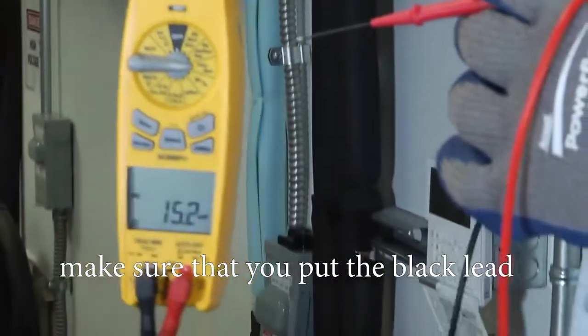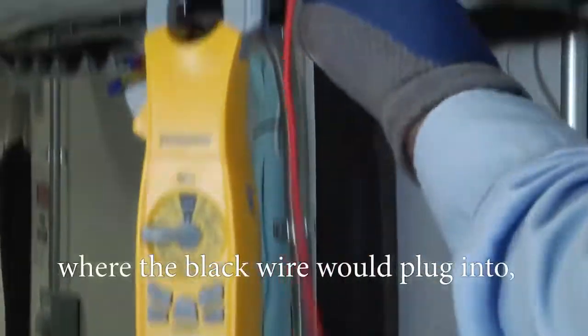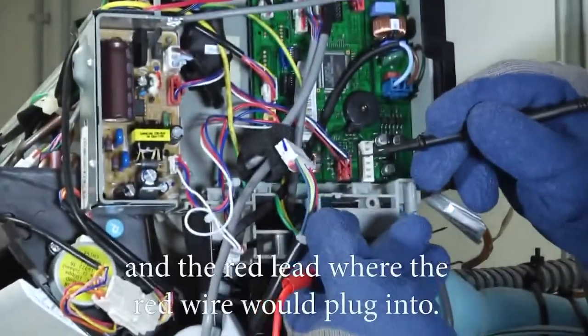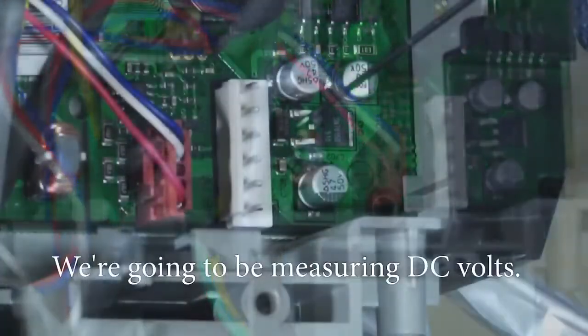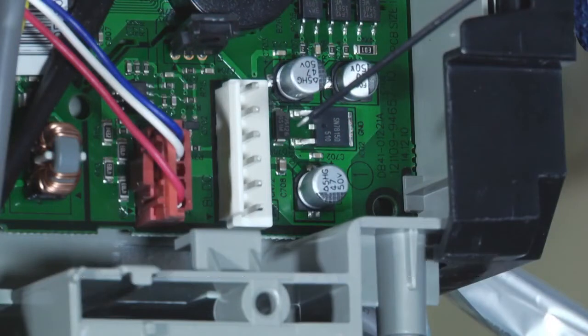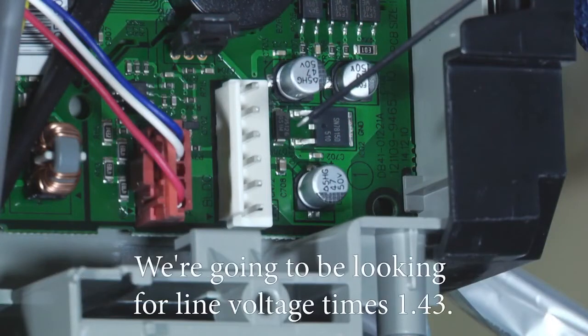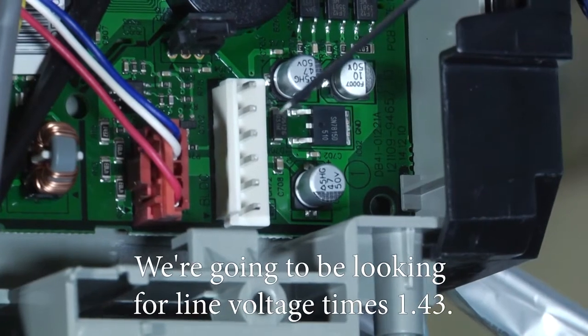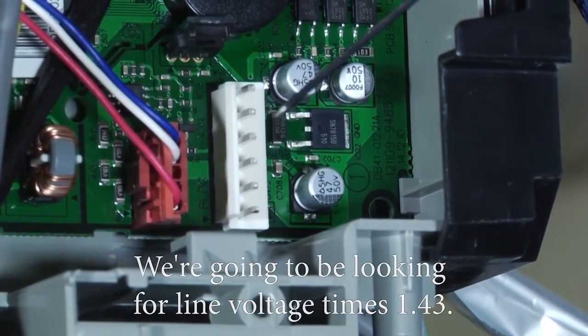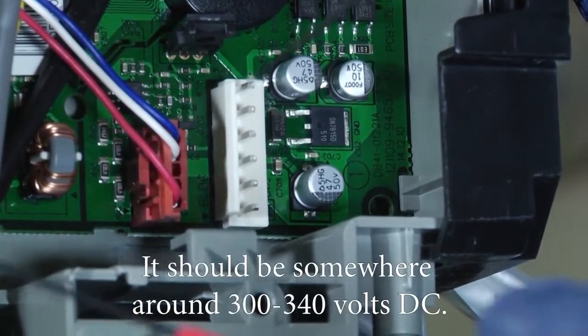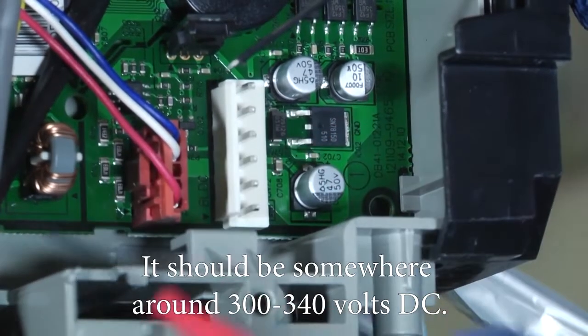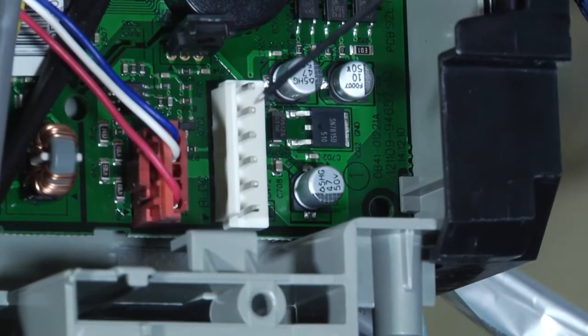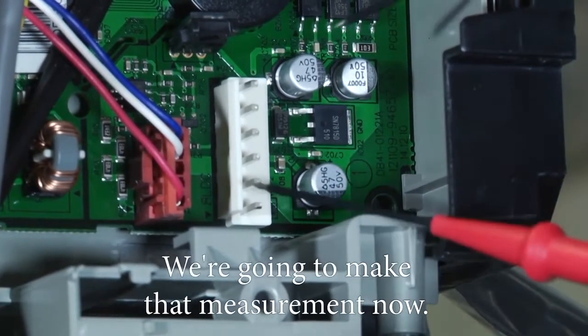We're going to be measuring DC volts. We're going to be looking for line voltage times 1.43. It should be somewhere around 300 to 340 volts DC. So we're going to make that measurement now.